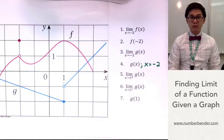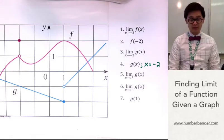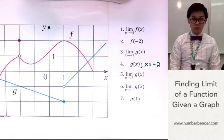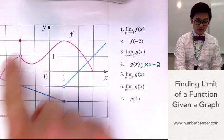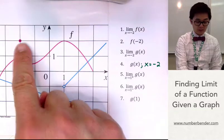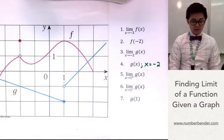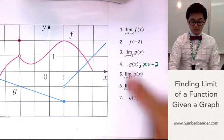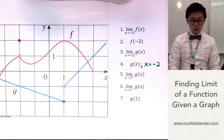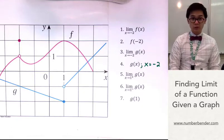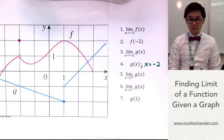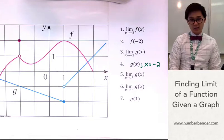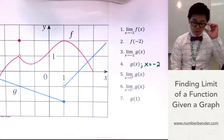Today we're going to be answering problems involving limits, but this time the functions given to us will be in graph form. In this particular problem, we have two functions: f of x, represented by the pink graph including this dot over here, and g of x, represented by the blue graph. All you need to know is the basic definition of a limit — the value of y as x approaches a certain constant.